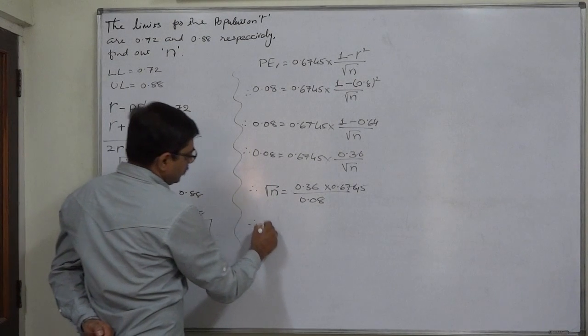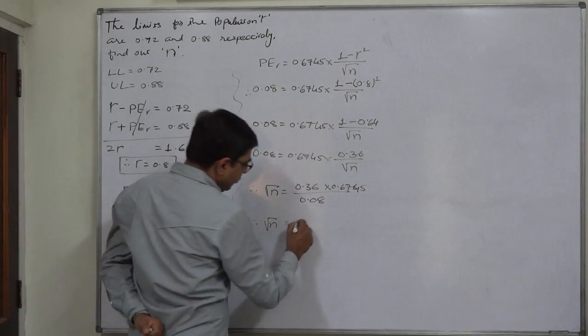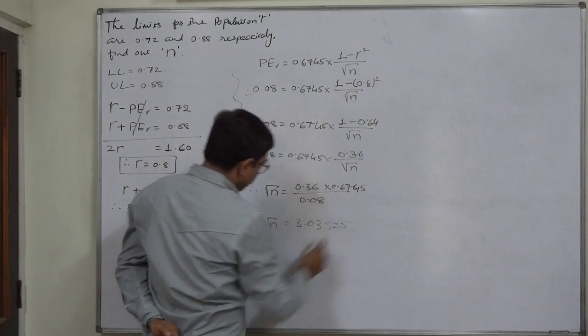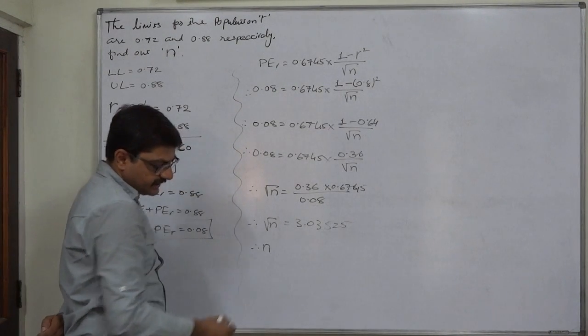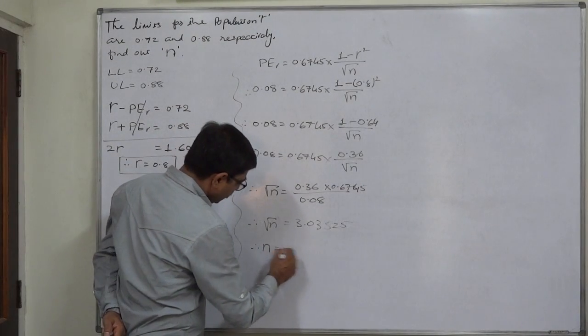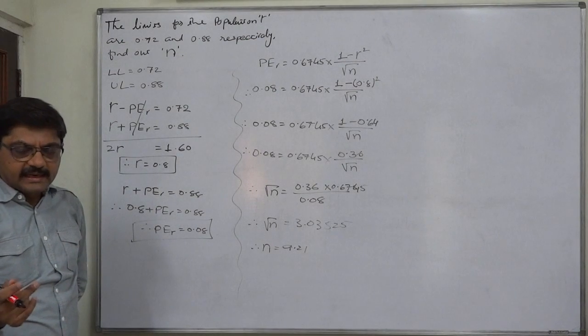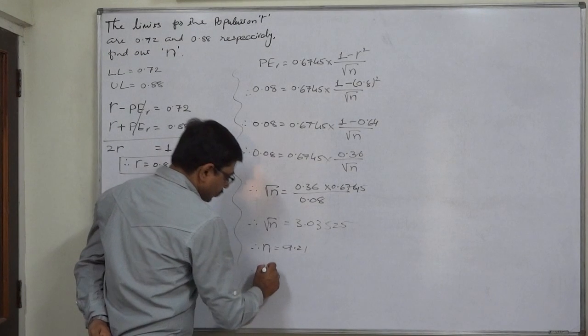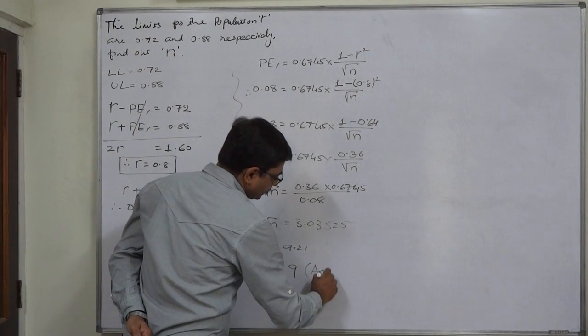So ultimately under root N is 3.03525. We have to get the squared values on both the sides, so ultimately that will be 9.21. But as we know that N or sample size can never be a fractional value, it must be an integer, so we can say that N or sample size is 9 approximately.